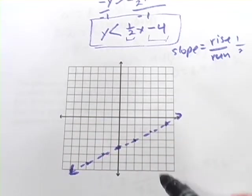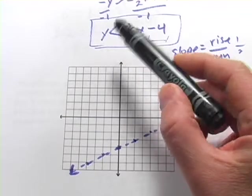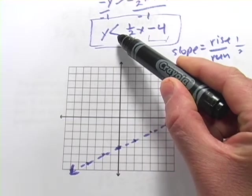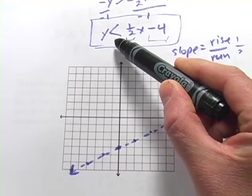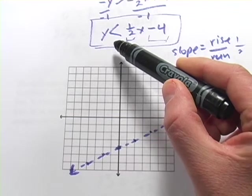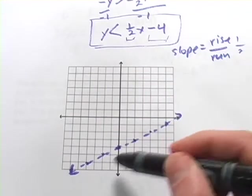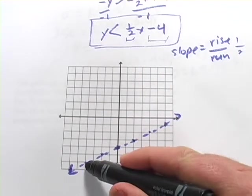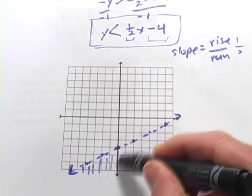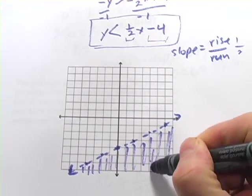Now we're not quite done. We've got our line, but this is an inequality. And the inequality says y is less than. What that means is you want to shade in the area on the graph below the line. When y is less than, you shade below. When y is greater than, you shade above. So we would shade in all of this area here.